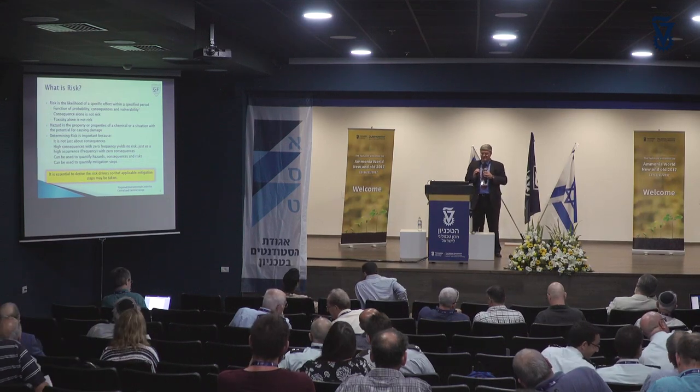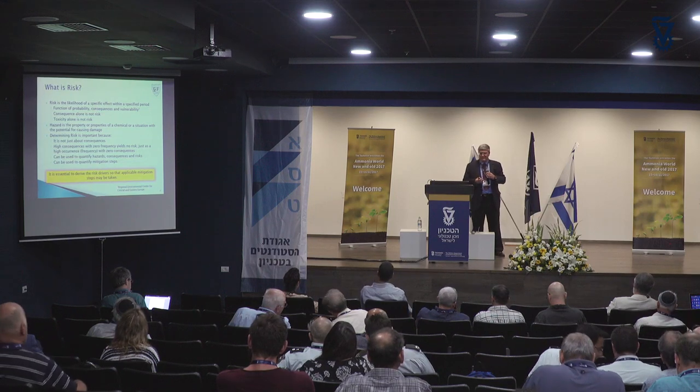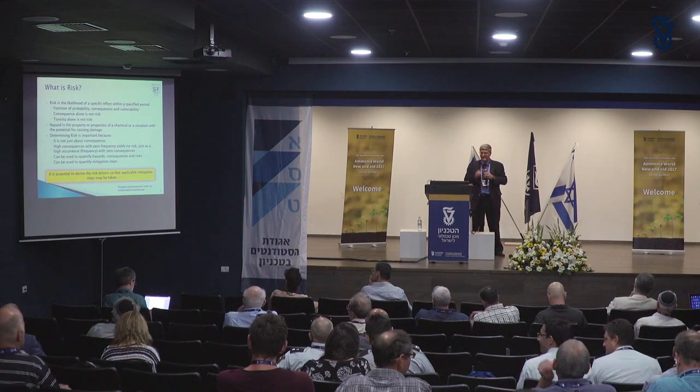Risk is a combination of things. It's the likelihood of a specific event, a specific effect within a specific period of time. It is a function of multiple things. The way we tend to look at it is it's a function of consequence, vulnerability, and threat. But a lot of people combine vulnerability and threat into probability or frequency. That's actually how we'll be looking at it today — risk as a function of frequency and consequence.